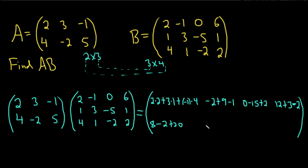Now the second row, second column: 4 times negative 1 is negative 4, negative 2 times 3 is negative 6, and 5 times 1 is 5.